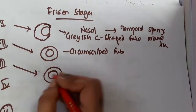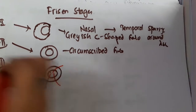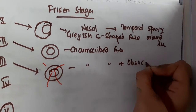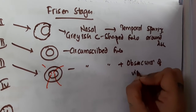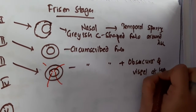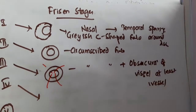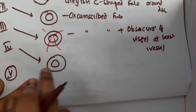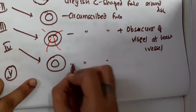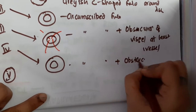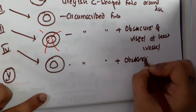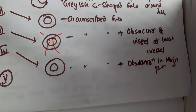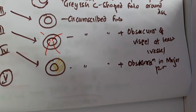In stage three, along with the circumscribed hollow, there is obscuration of at least one vessel — only one segment of a vessel is obscured, but at least one vessel is affected. Then in stage four, you will see a complete hollow and complete obscuration of the disc, but the obscuration is present in the major part — not completely, but in the major part you will see obscuration, meaning you cannot see things properly.